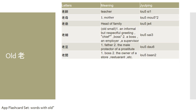Honestly and frankly in Cantonese is 老實 (lou sat). Teacher in Cantonese is 老師 (lou si). A very informal term for mother — sometimes used in offensive expressions in Cantonese — is 老母 (lou mou).